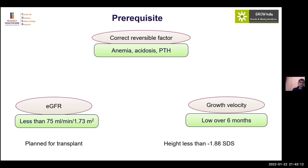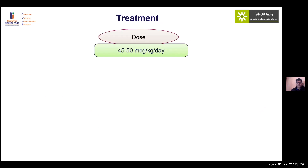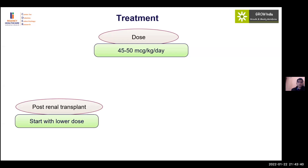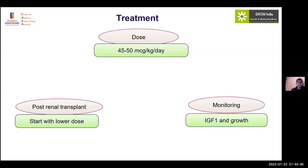Consider whether the child is planned for transplant. The height threshold for CKD is less than minus 1.88 SDS — slightly different from the standard minus 2 SDS — as per CKD guidelines. Since we are treating growth hormone insensitivity rather than deficiency, the dosage is pharmacological: 45 to 50 micrograms per kg per day. Post-renal transplant, growth hormone is indicated at a lower dose. Growth monitoring and fundal examination should continue during therapy.